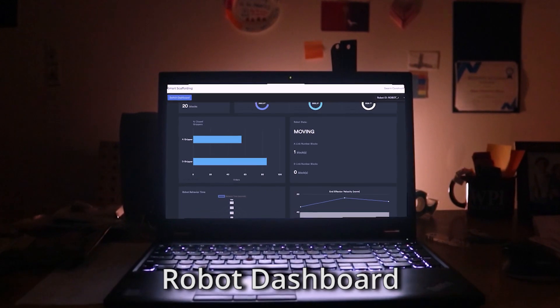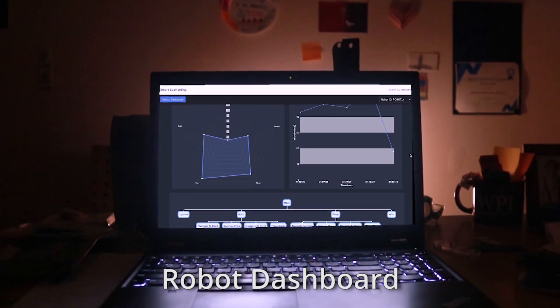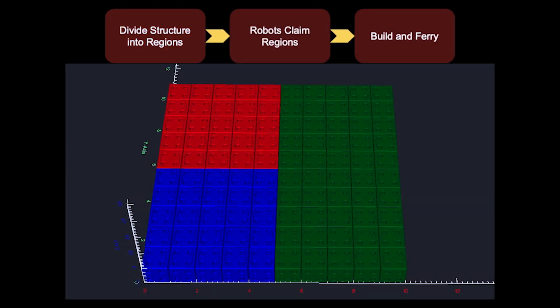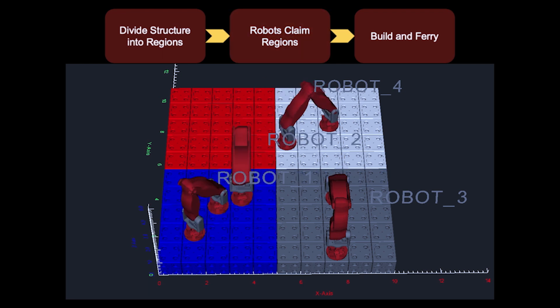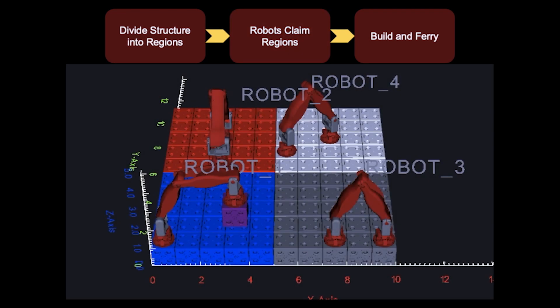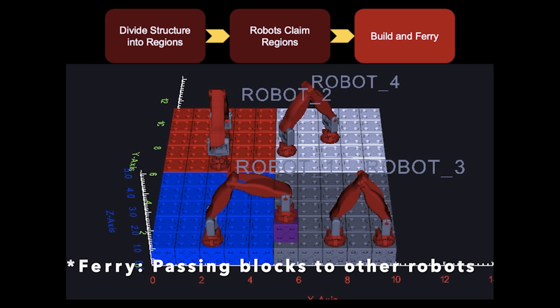The building algorithm works by dividing a given structure into different regions. The robots then distribute into one of these regions. Construction begins by moving blocks throughout the structure.